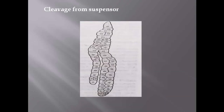The next type included in cleavage polyembryony involves the suspensor cells. The typical structure of embryo shows three to four layers. The suspensor cells undergo continuous division, enlarge, and undergo longitudinal division — forming an embryo. This type of cleavage of the suspensor to form the embryo is also considered cleavage polyembryony.